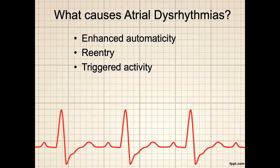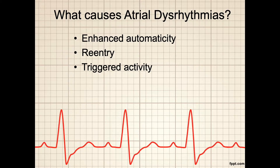In re-entry, an impulse is delayed along a slow conduction pathway. Despite the delay, the impulse remains active enough to produce another impulse during myocardial repolarization. Re-entry may occur with coronary artery disease, cardiomyopathy, or myocardial infarction. Triggered activity is when an injured cell sometimes only partly repolarizes. Partial repolarization can lead to repetitive ectopic firing called triggered activity. The depolarization produced by triggered activity is known as after-depolarization and can lead to atrial or ventricular tachycardia. After-depolarization can occur with cell injury, digoxin toxicity, and other conditions.